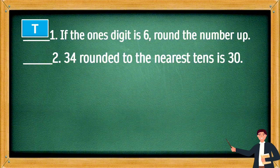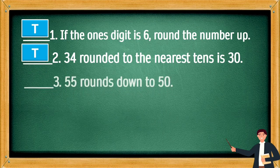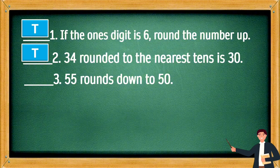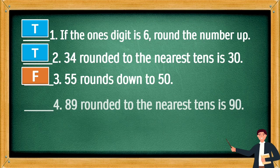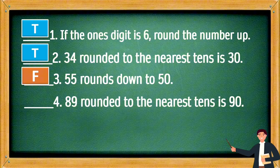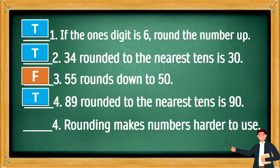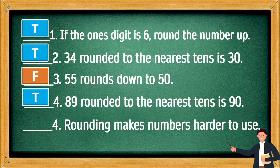This is T. 55 rounds down to 50. This is F. 89 rounded to the nearest tens is 90. This is T. Rounding makes numbers harder to use. This is F.